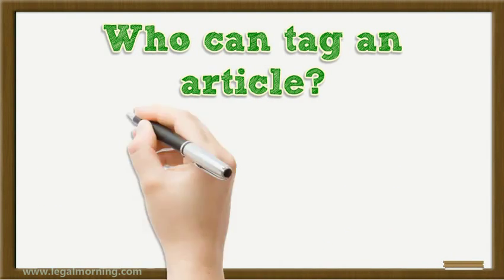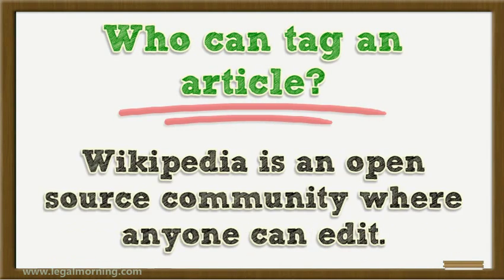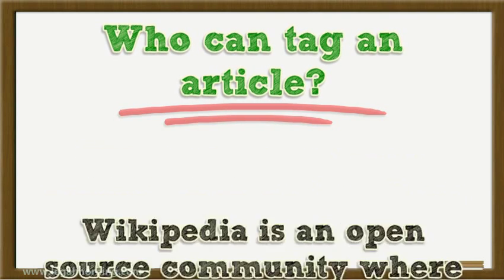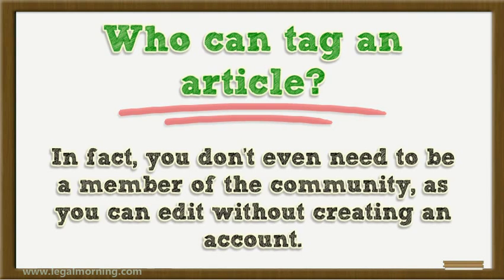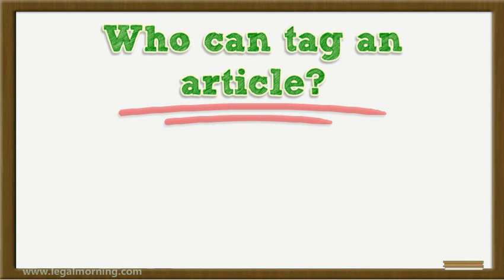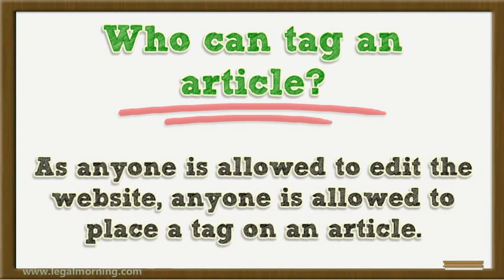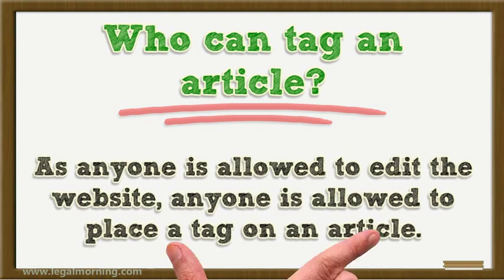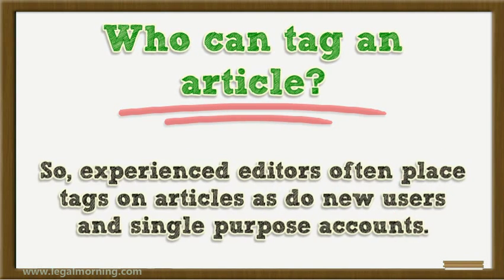Who can tag an article? Wikipedia is an open source community where anyone can edit. In fact, you don't even need to be a member of the community, as you can edit without creating an account. As anyone is allowed to edit the website, anyone is allowed to place a tag on an article.